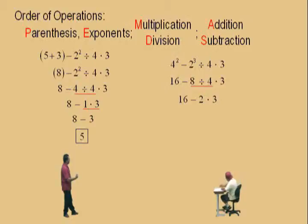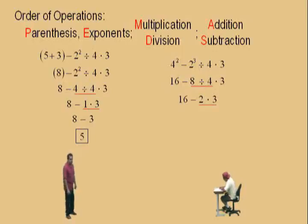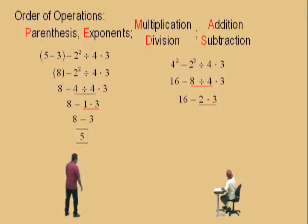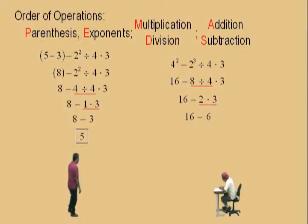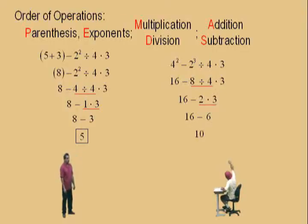Now, what do we do first? We've got a subtraction and a multiplication, Charlie. Multiplication — you have to do the multiplication first, right? Now, it's just 2 times 3. What's 2 times 3, Charlie? 6, right? And we have 16 subtract 6, which is 10.